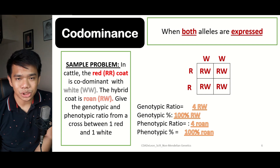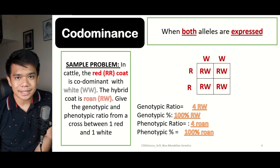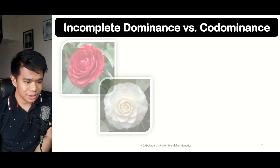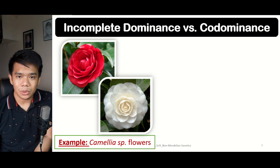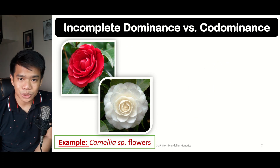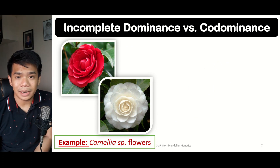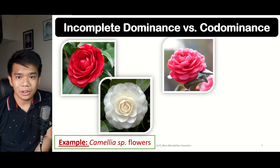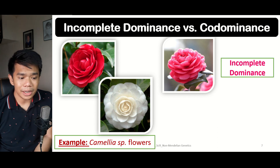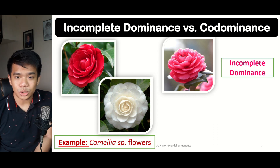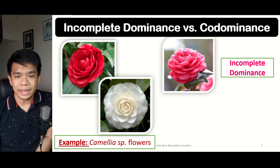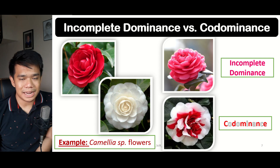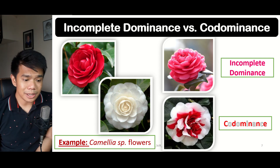Here is a visual comparison of the difference between incomplete dominance and co-dominance using camellia flowers. In incomplete dominance, the traits are weak dominant — red and white blend to form pink-colored flower offspring. However, if the red and white colors are strong dominant traits, the offspring will show a combination of both red and white — that is co-dominance.